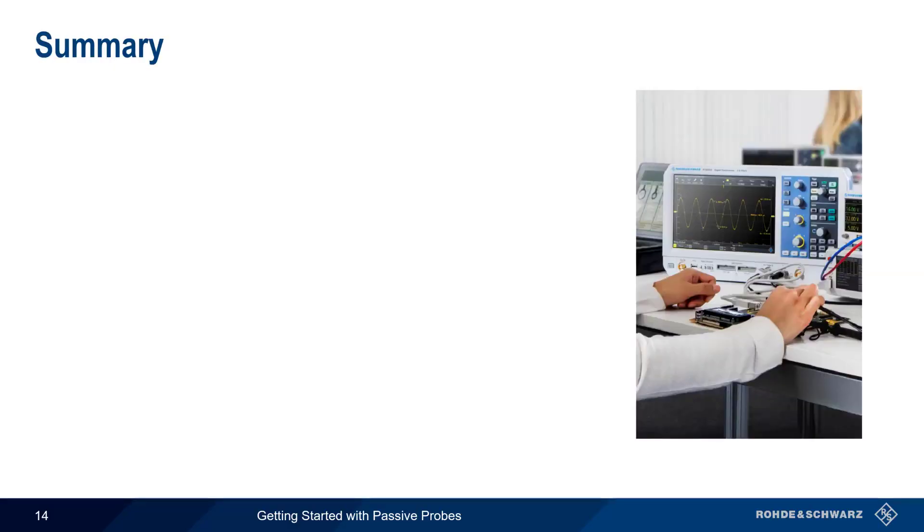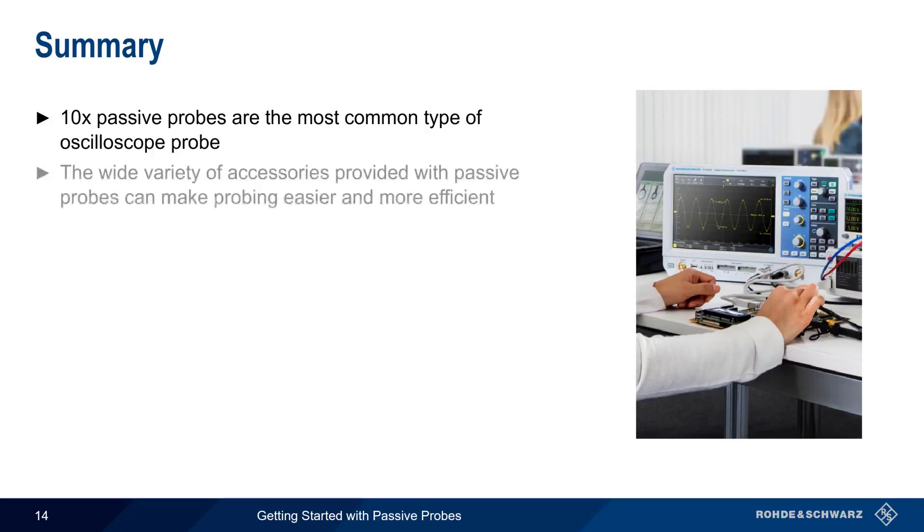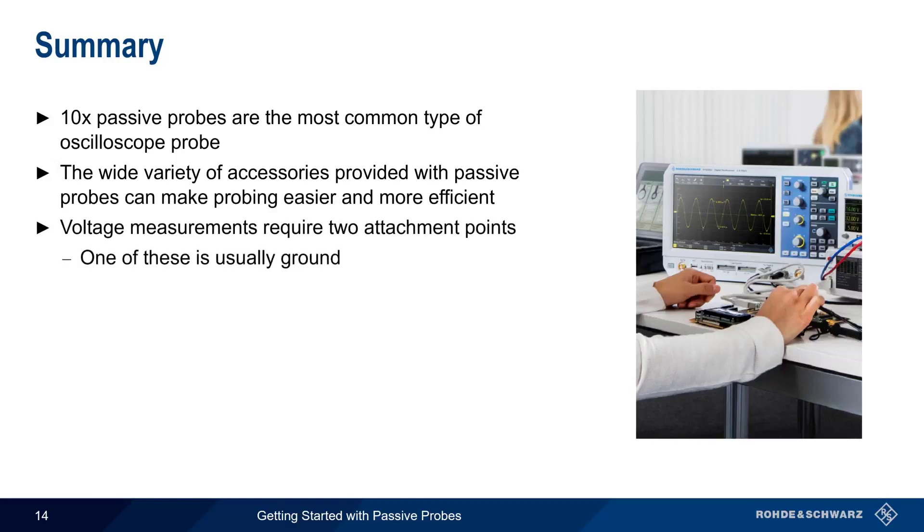Let's end with a brief summary. A 10x passive probe is the most common and most widely used type of oscilloscope probe, and these are the basic probes provided with all Rohde & Schwarz oscilloscopes. In addition to the basic probe itself, most passive probes come with a variety of accessories that can make probing easier and more efficient. Remember that to measure a voltage, we need to attach our probe at two points, one of these typically being ground. The ground lead also needs to be kept as short as possible, since the inductance created by long ground leads can cause ringing or other distortion in the acquired waveforms.